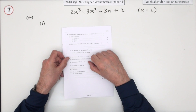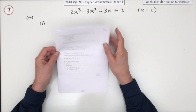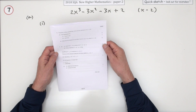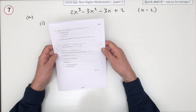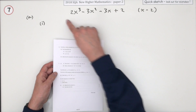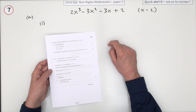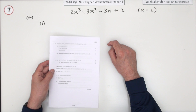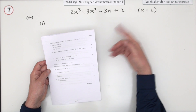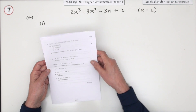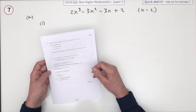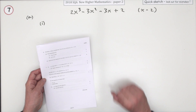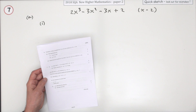Question 7 from Paper 2 of the 2018 Higher Maths — another 9-mark question. There's your cubic expression and the usual: show that this is a factor, factorise it fully, and then do something else with it.